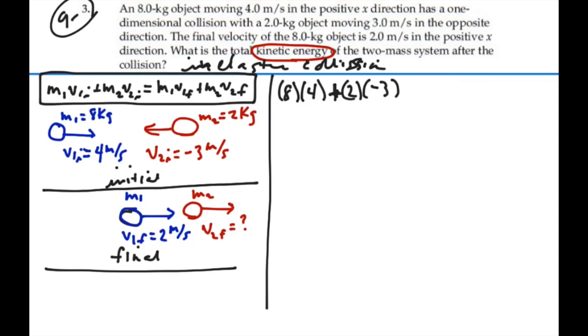Plus mass 2, 2 kilograms, moving with a final velocity, which we wish to find. We have a bunch of numbers in here, and we have V2 final, so we can solve for V2 final.